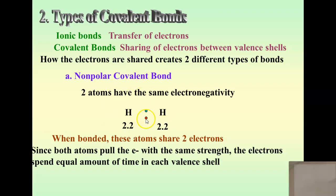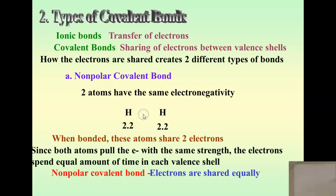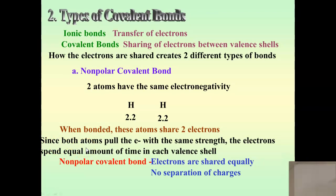So let's watch as these electrons bounce around — they're going to bounce together as a pair. First they're over here, then there — they're just hopping back and forth, spending equal amounts of time around each atom. A nonpolar covalent bond is when you have the electrons shared equally. There's no separation of charge.